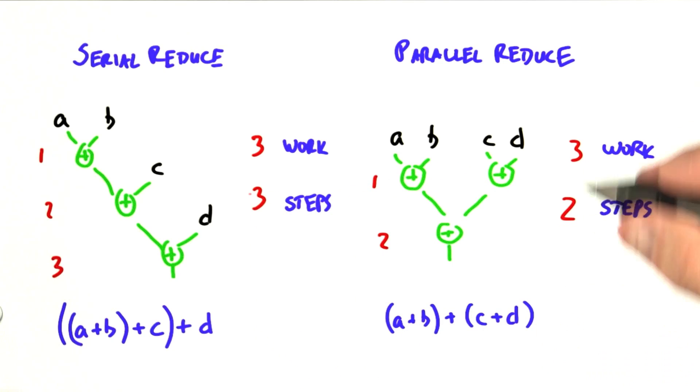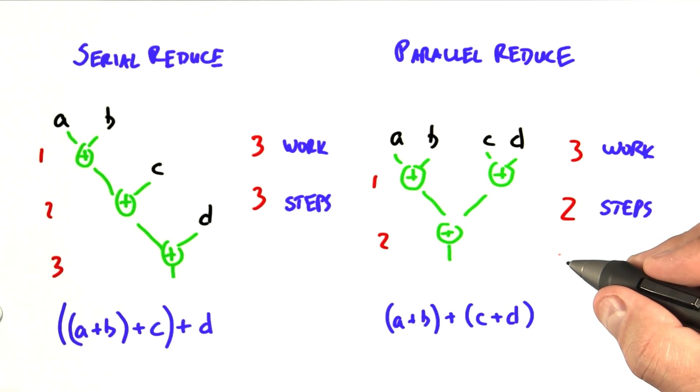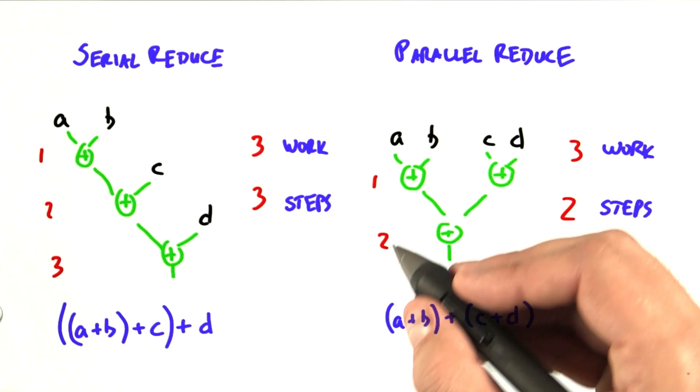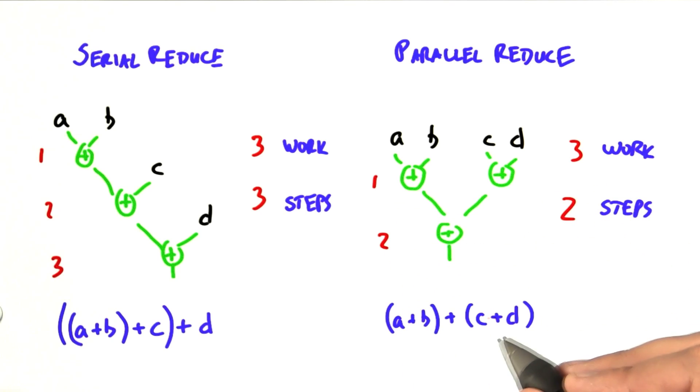So potentially, we can run this with parallel hardware, and it will complete faster. If we extend this problem to reduce a set of elements of size n, we're very interested in the work and the step complexity as a function of n. So what's the complexity of these four metrics?